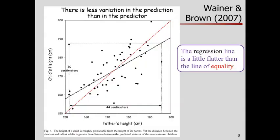What are we talking about with this phenomenon? The prediction is closer to the mean. Here's a more modern version of what Galton was studying. Along the horizontal axis we have father's height measured in centimeters, and along the vertical axis is the child's height. There's a scatter plot with data points corresponding to how tall the parent is and how tall the child is.